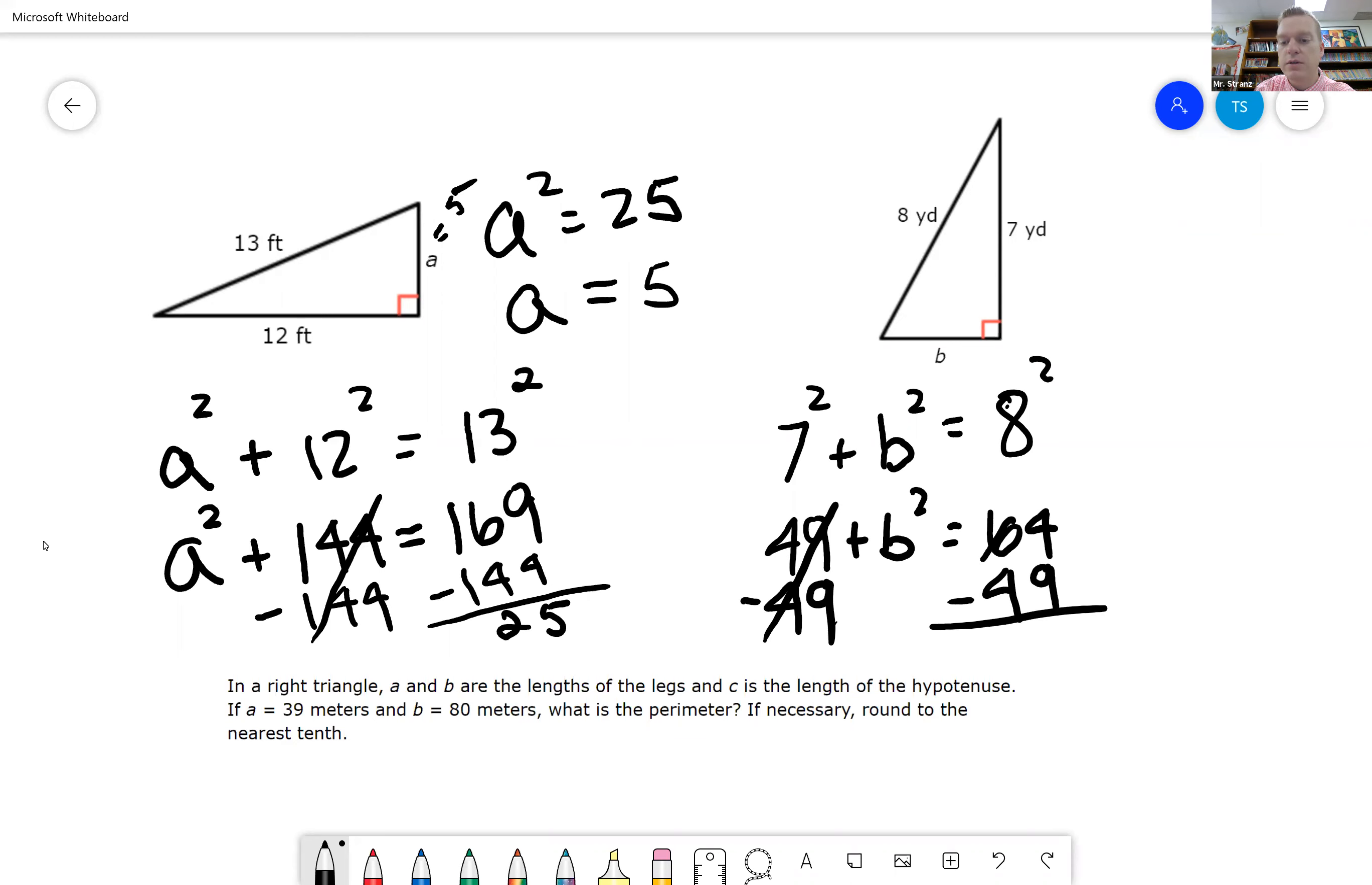so we're going to need to cancel. 14 minus 9 is 5, so it's going to be 15. So we know B squared is going to equal 15.